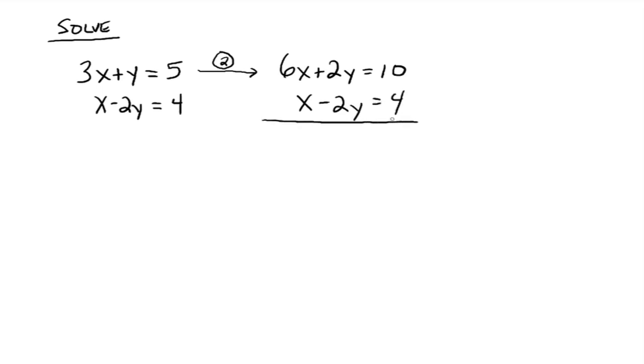And then add them up. So that gives you 7X. The Y's go away. That's the whole reason we're doing this. And then that gives you 14. So then X equals 2. And then go back and figure out what Y needs to be.